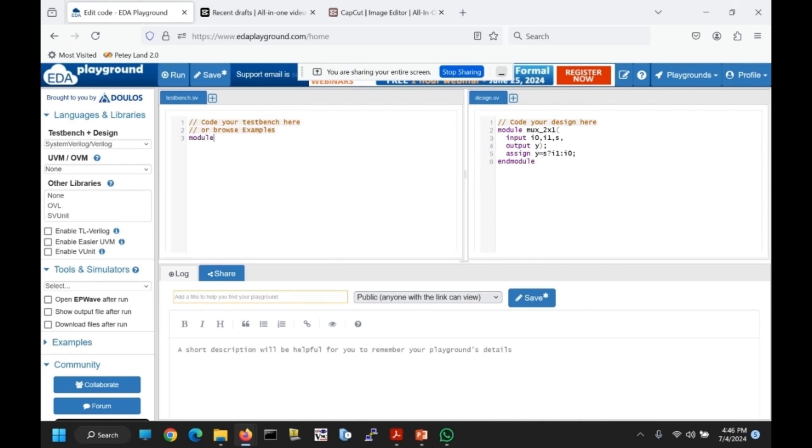Now let's move on to the testbench. Module tb. Here inputs as regs, outputs as wires. reg I0, I1, s wire y.